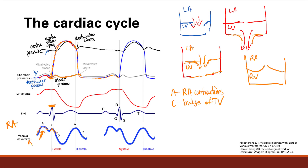The atrium can finally relax after just finishing squeezing — that's the X descent, representing right atrial relaxation. And since the tricuspid valve is now closed, blood is flowing into the atrium but not leaving. So this is where we fill up with inflow of blood into the right atrium — that's the V wave.